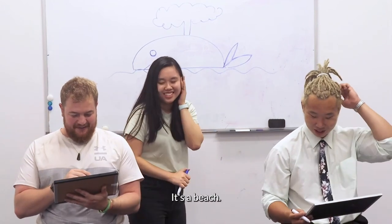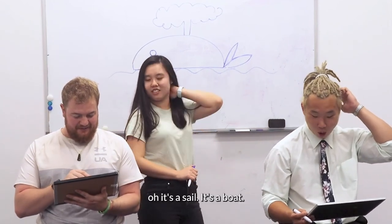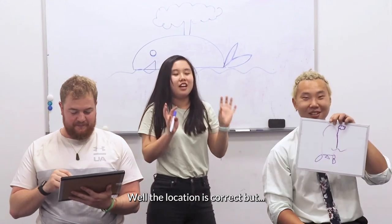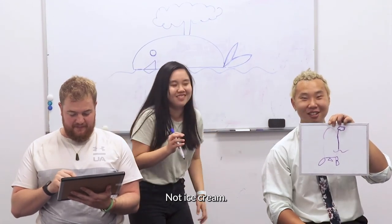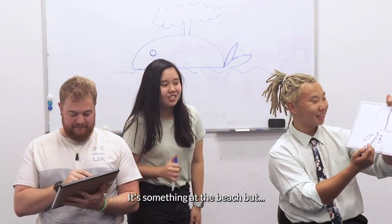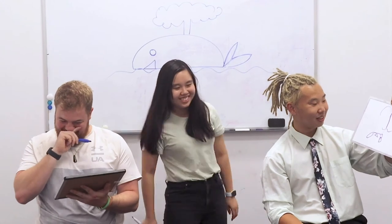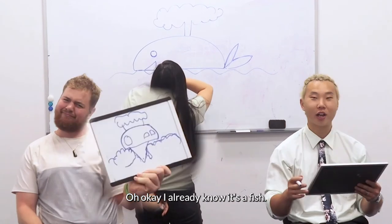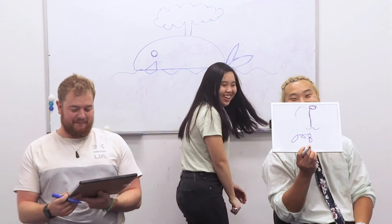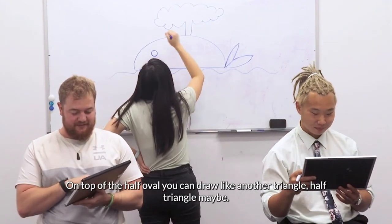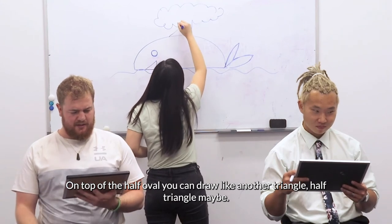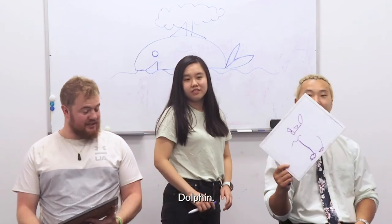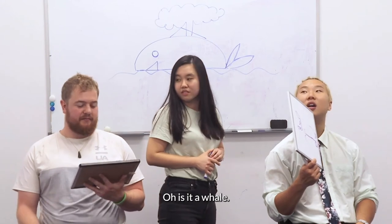You guys want to guess what it is? It's a beach. It's an island? A sail? A boat? The location is correct. Is it an ice cream? Not ice cream. It's a beach — it's something at the beach. It's bubble tea? Okay, I already know — it's a fish. What type of fish is that? On top of the half-oval, you can draw like another triangle — half triangle maybe? Shark? Not really. Is it a whale? Yes, it's a whale!